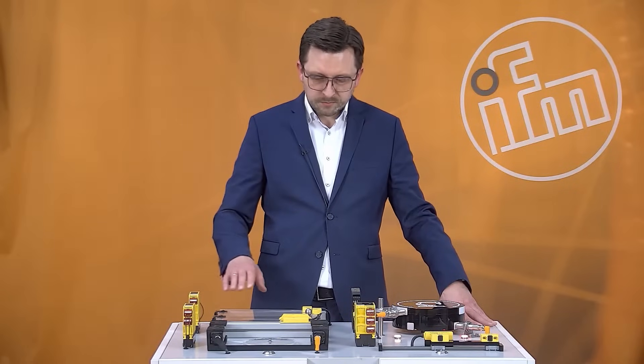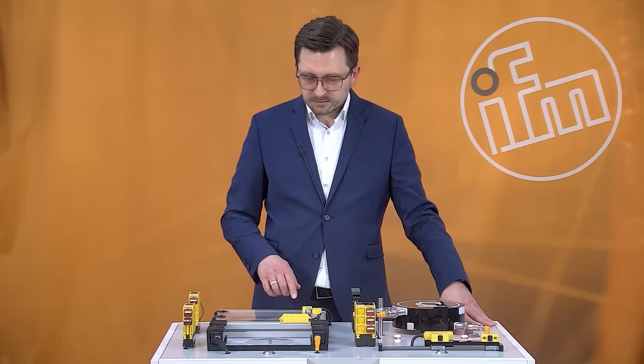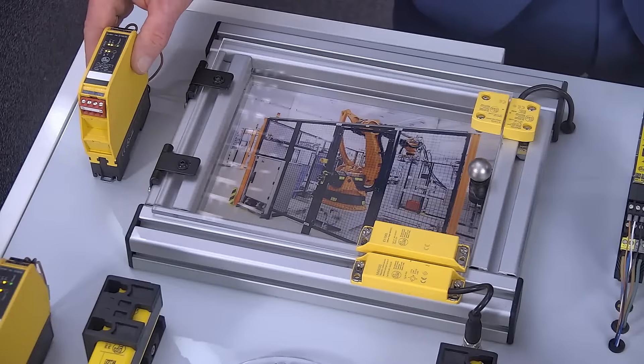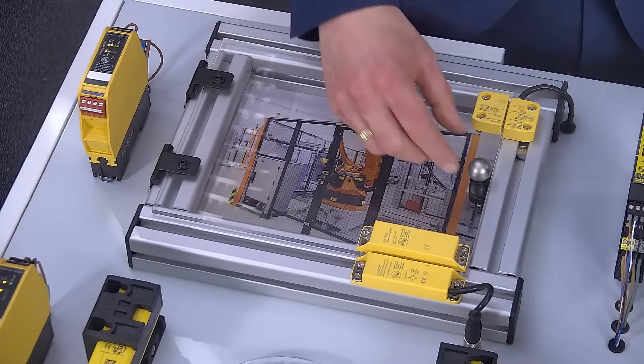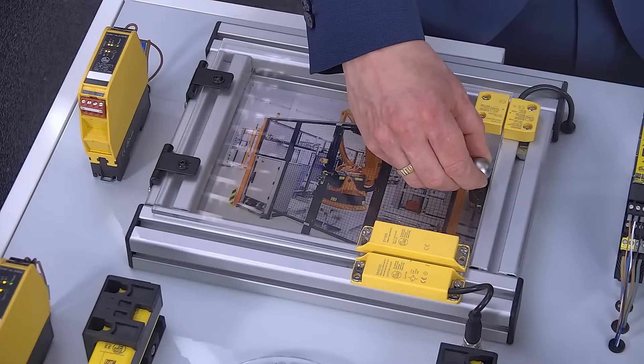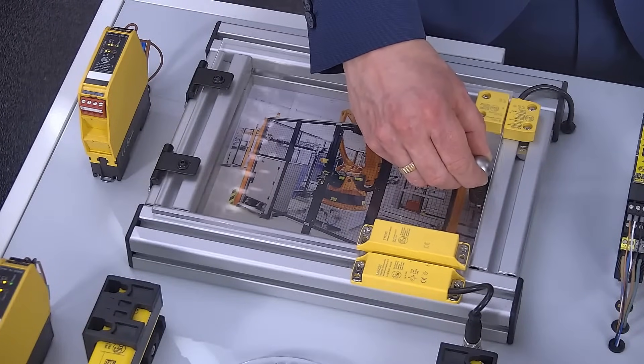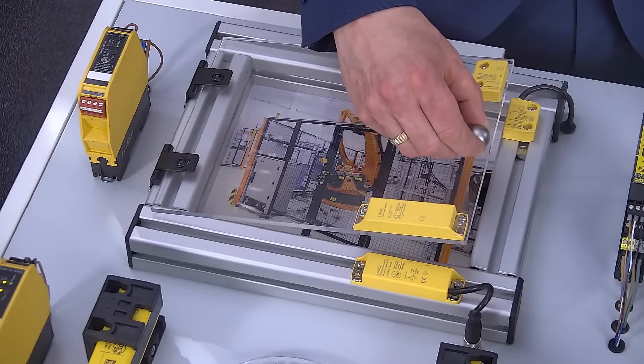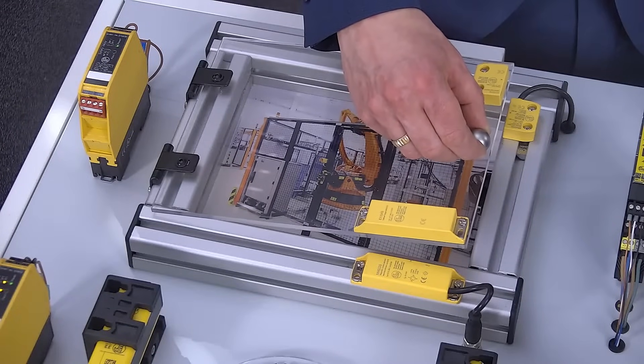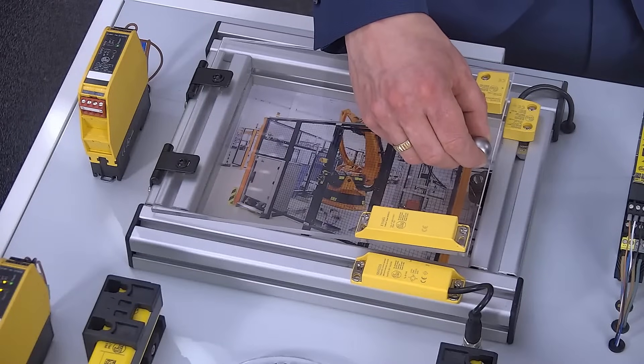In this case both sensors are connected in series to our safety relay, and if one of the actuators is removed from the sensor, the safety circuit is closed and stops the machine.